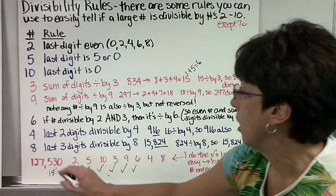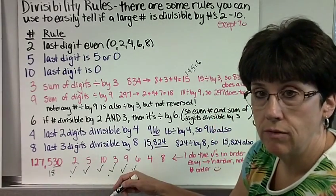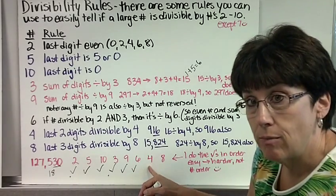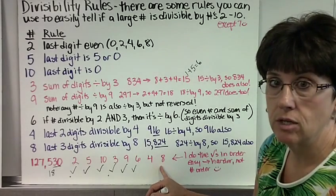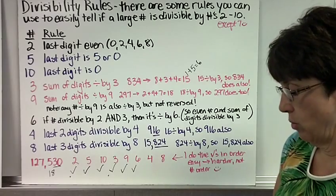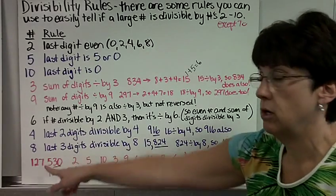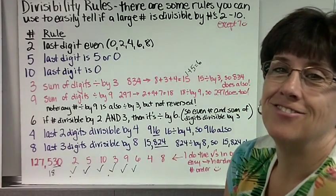Is it divisible by 4? I need to look at the number 30. Does 4 go into 30 evenly? No. And if 4 doesn't go into the number, then 8 won't either. The same as the 3 and the 9. If 3 doesn't go in, 9 won't either. If 4 doesn't go in, 8 doesn't go in. So I'm finished checking all the divisibility rules for 127,530. And that's it.